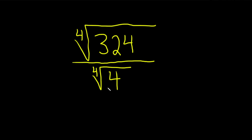So because everything is positive, there's no issues. So this is the fourth root of, and then we end up with 324 divided by 4. And so now we just have to figure out what this is.